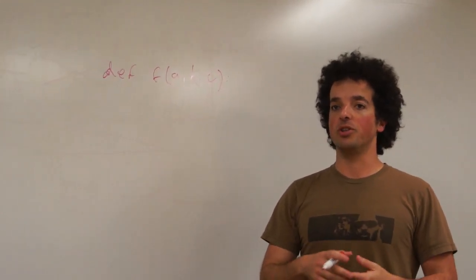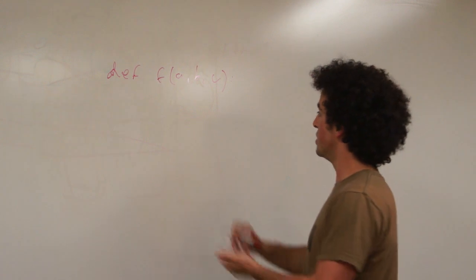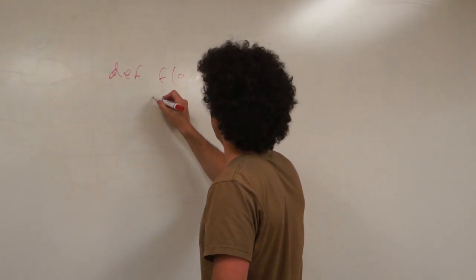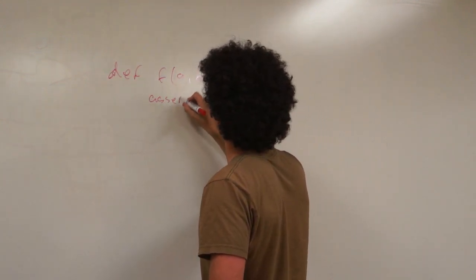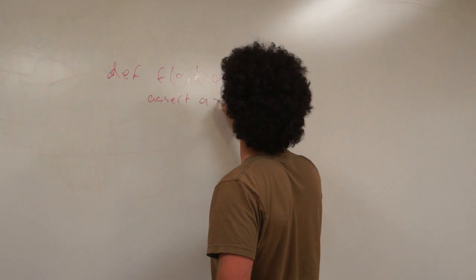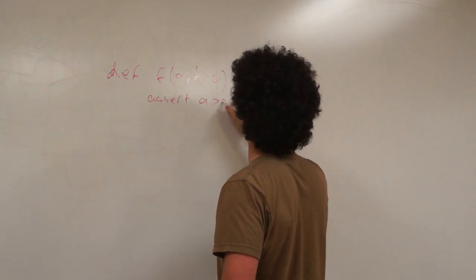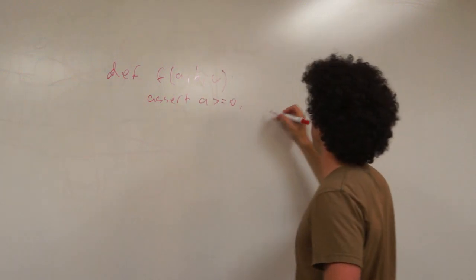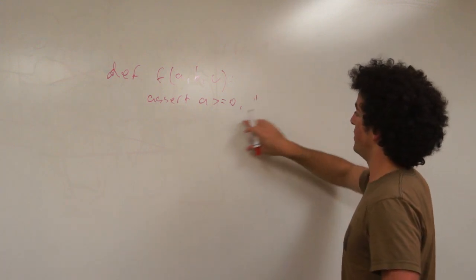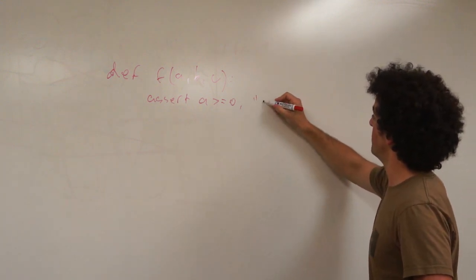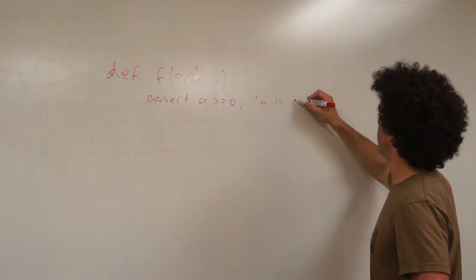Masses can't be smaller than 0, negative masses don't exist. So we might want to assert, for example, that a is larger than or equal to 0. And then we'll have the message 'a is negative'.